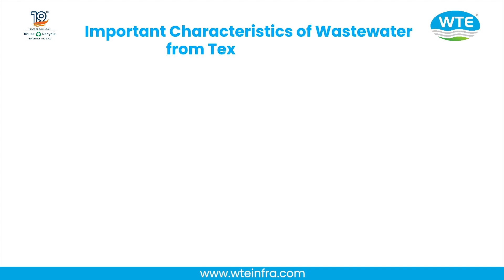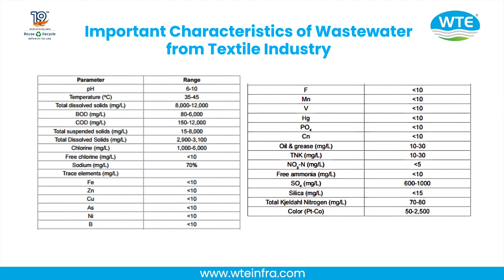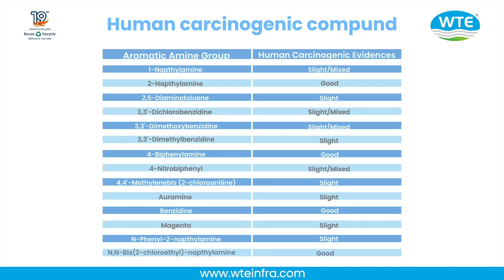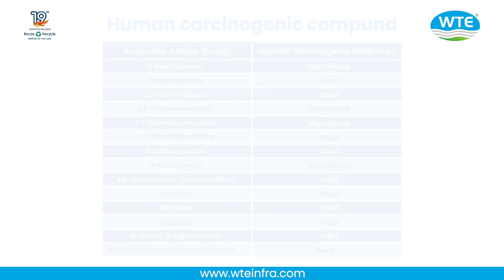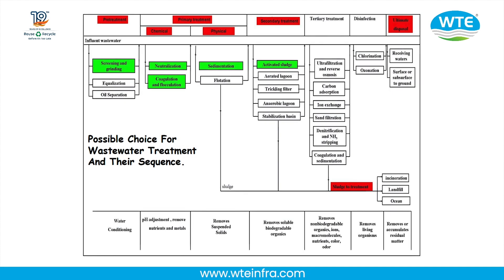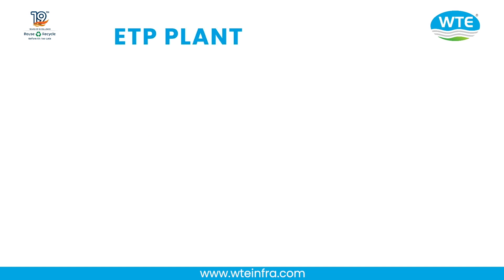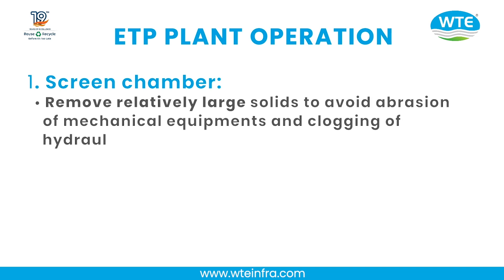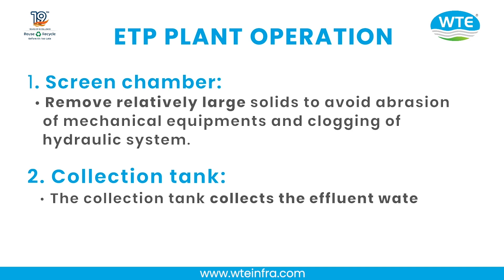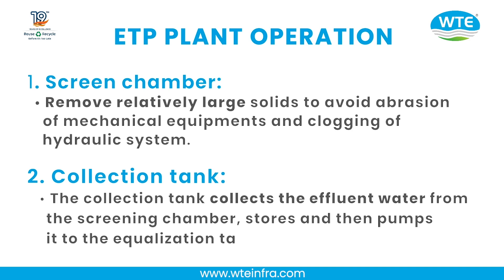Important characteristics of wastewater from the textile industry are reviewed. ETP Plant Operation Step 1 — Screen Chamber: Removes relatively large solids to avoid abrasion of mechanical equipment and clogging of the hydraulic system.